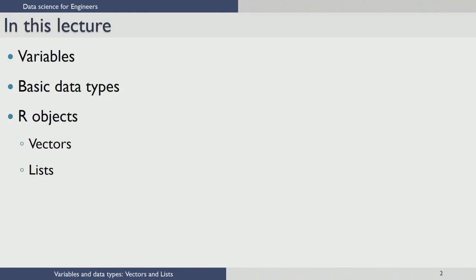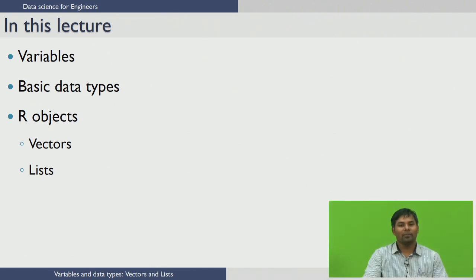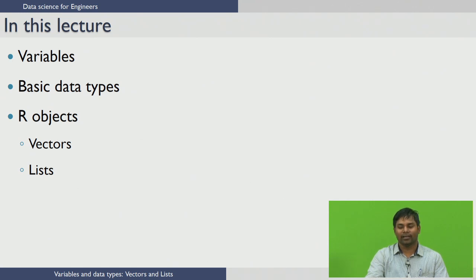Welcome to lecture 3 of the R module in the course Data Science for Engineers. In this lecture we are going to see the rules for naming variables in R, the basic data types available in R, and two basic R objects — vectors and lists — in detail.